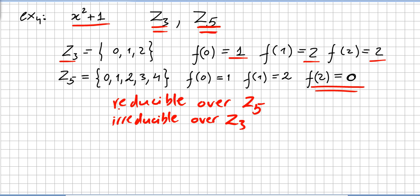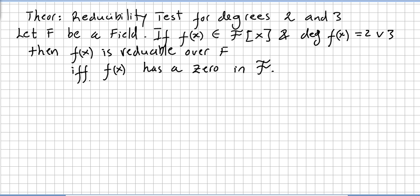It is not always easy to determine if a polynomial is reducible or not over a given integral domain — in some cases it is easy, in others not so easy. We are going to show a couple of theorems that will help us. Here we have a theorem about the reducibility test for degrees 2 and 3.